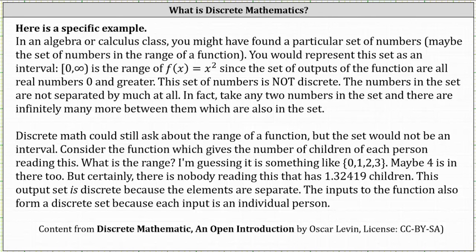Consider the function that gives the number of children for each person reading this. What is the range? I'm guessing it's something like the set containing zero, one, two, and three. Maybe four is in there too.